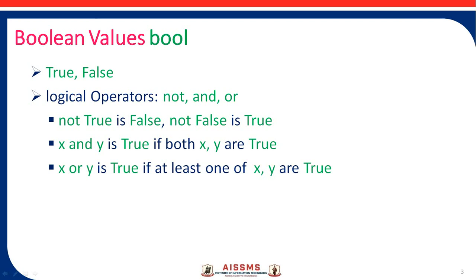The NOT operator inverts the value. If the value is true, then NOT true gives false. If the value is false, NOT false gives true — the value gets inverted. For the AND operator, when both values x and y are true, the result is true. For the logical OR operator, when any one value is true, the result is true.